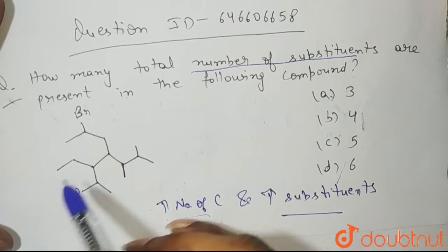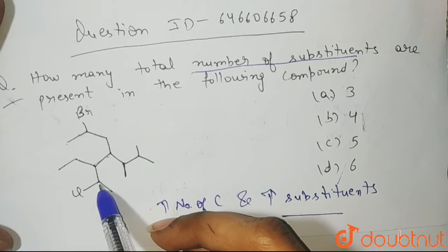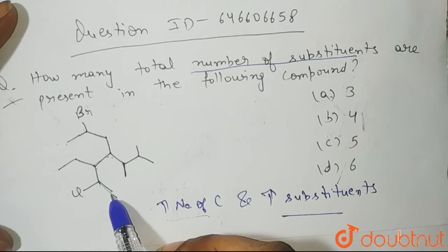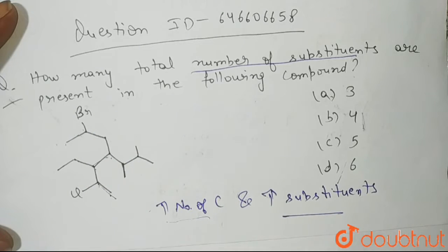So if you count from here, 1, 2, 3, 4, 5, 6 and 7. Then you will get 7 number of carbon atoms but how many substituents are present? 1, 2, 3 and 4. Only 4 substituents.